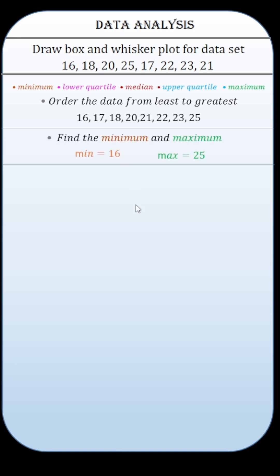Let's see how to draw a box and whisker plot for the given data set. First order the data from least to greatest and find the minimum and maximum data in the data set.